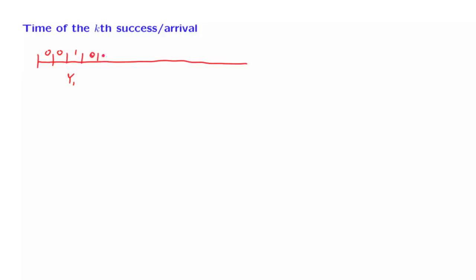Then we keep observing the process, and there is a time at which a second arrival comes. We call that time y2. The process continues, and there is a certain time that the third arrival comes. We call that time y3.